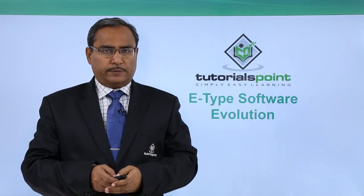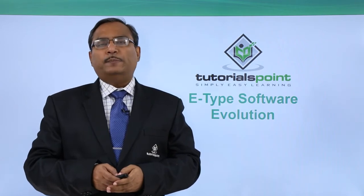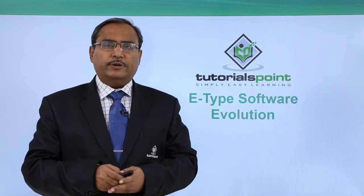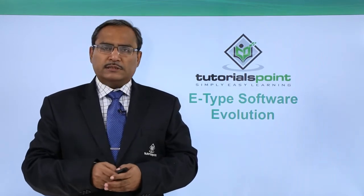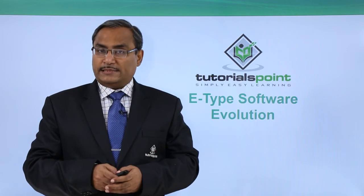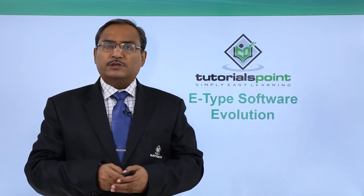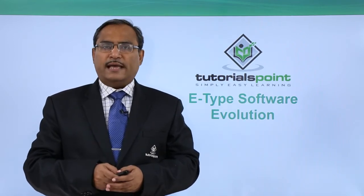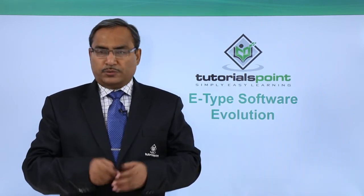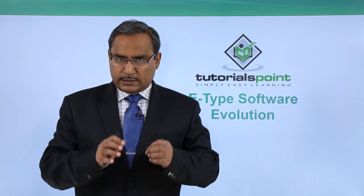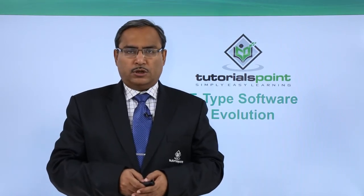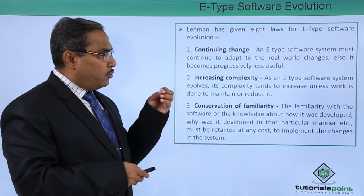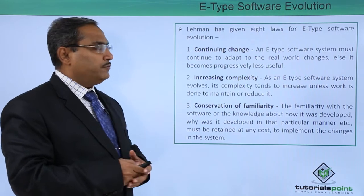E-type software evolution. In the previous video, we discussed that Lehman divided software into mainly three different categories: the first category was static type, denoted by S-type; the next was practical type, also known as P-type; and the last was embedded type, also known as E-type. In this session, we are discussing E-type software evolution. Lehman has eight laws for this E-type software evolution.